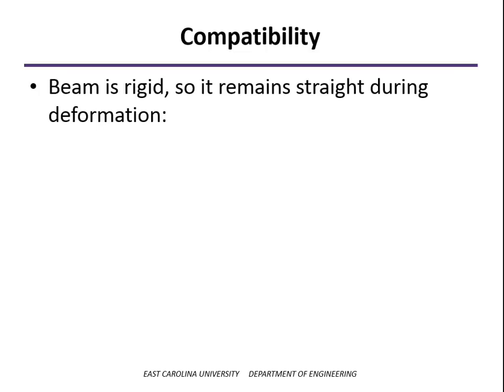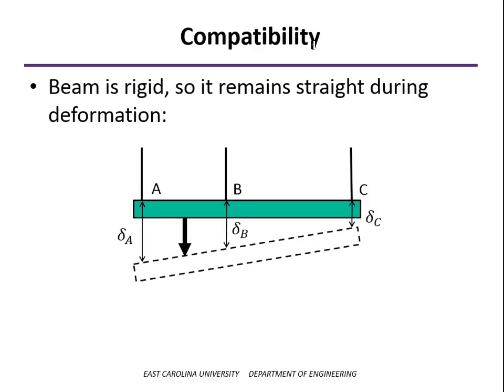So what we need is a compatibility equation. Let's think about how the beam will deform. Well, the beam actually is rigid. So its deformation is going to remain rigid as the three wires stretch. And so from that, we can relate the amounts that the wires stretch: delta A, delta B, and delta C.